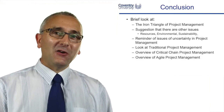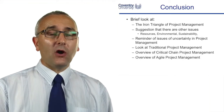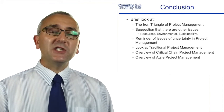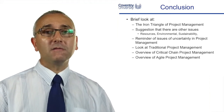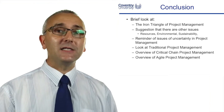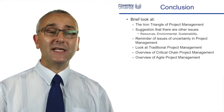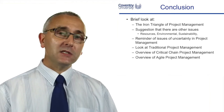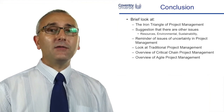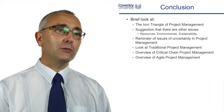We've had a reminder of traditional project management, we've looked at critical chain project management and agile project management. We started off by looking at the iron triangle of project management and suggested that sometimes there are other issues — environmental, sustainability, or resource issues — and that maybe the iron triangle has passed its sell-by date and other models are more applicable.